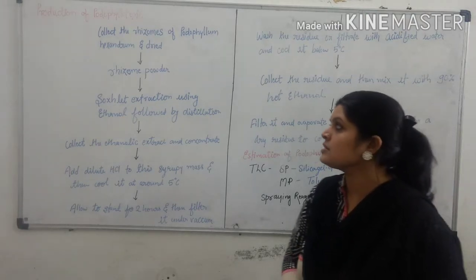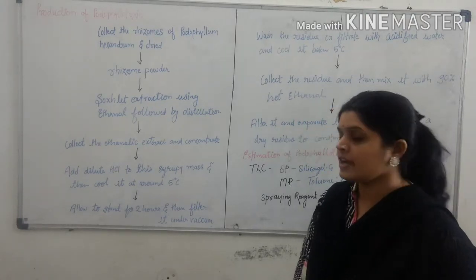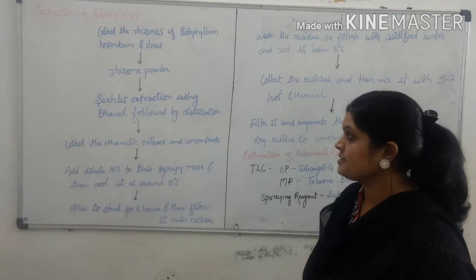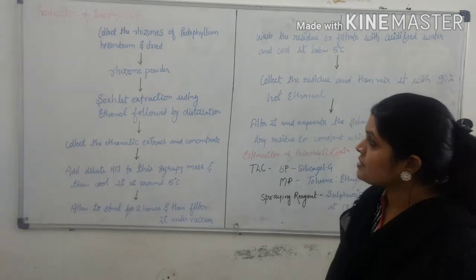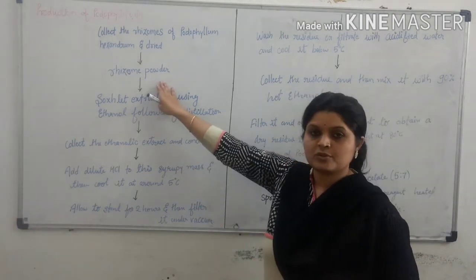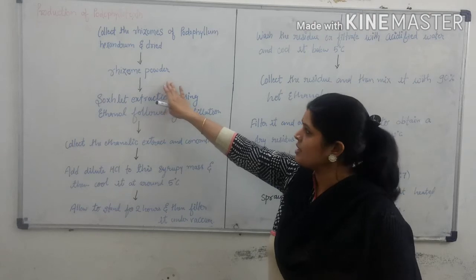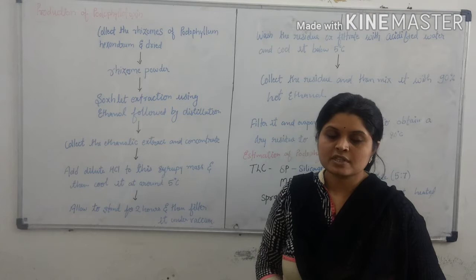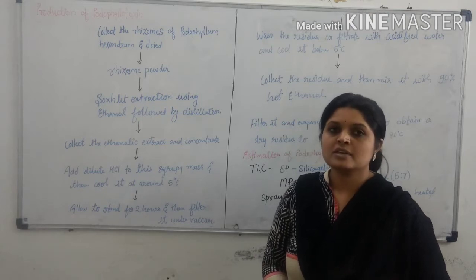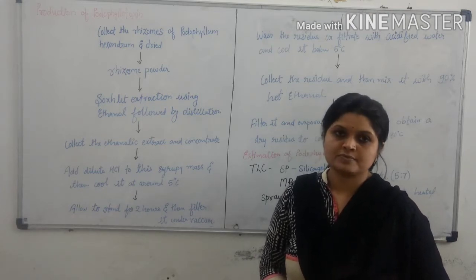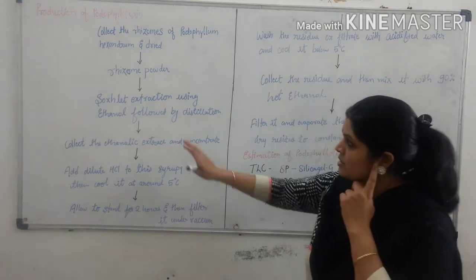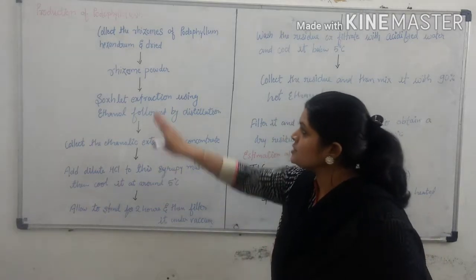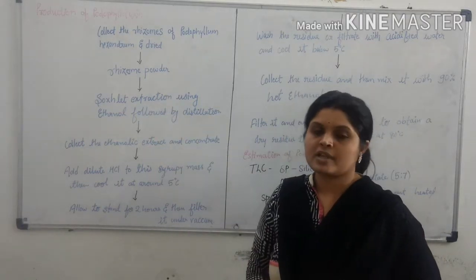Isolation and extraction of podophyllotoxin: Collect the rhizome of Podophyllum hexandrum and then it is dried. Then it is converted into powder. Why? Because it increases the surface area of each granule and enhances the yield of podophyllotoxin. So it is required.